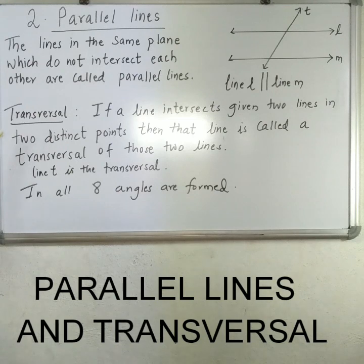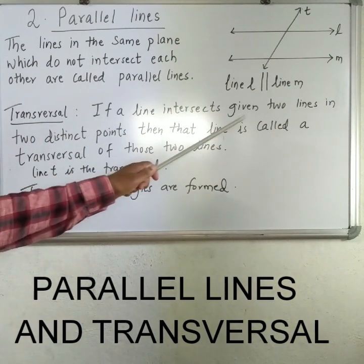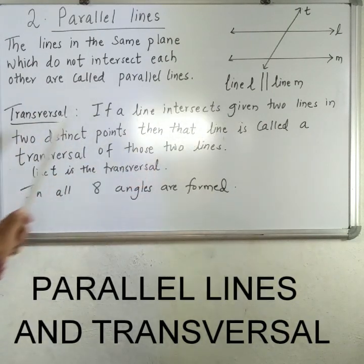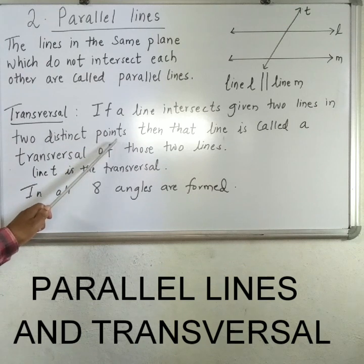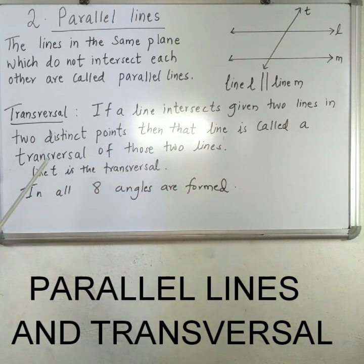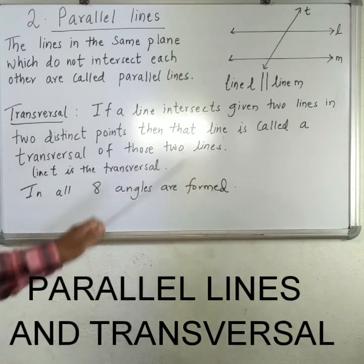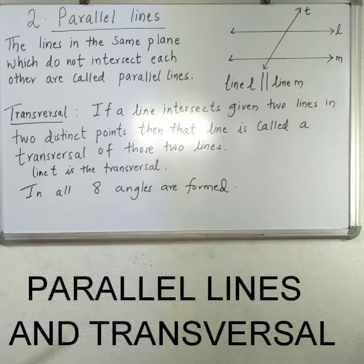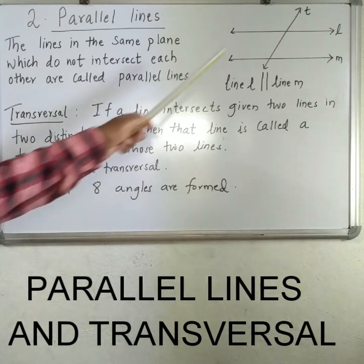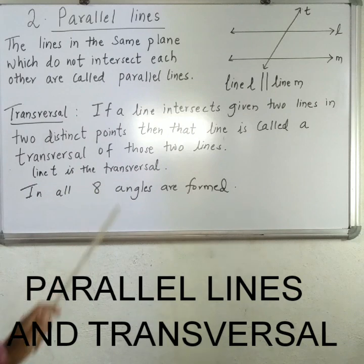The next term is transversal. If a line intersects two given lines in two distinct points, then that line is called a transversal of those two lines. Here, line T is a transversal.